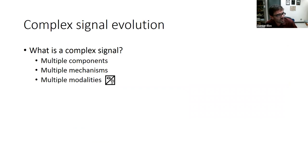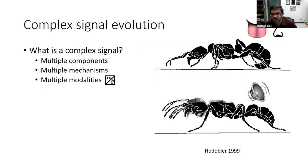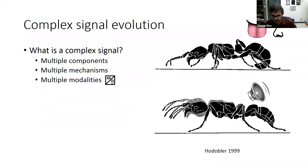You can also think about complex signal evolution in terms of multiple modalities. Ants are thought of as chemical machines — they have an incredible diversity of chemical signals, both contact and chemoreceptive. But some ants also produce vibratory displays. What caused ants to evolve this additional vibratory signal when they already have so many adaptations for chemical signaling? Across my system, I want to understand what drives multiple components, multiple mechanisms, and additional modalities becoming part of animals' repertoires.